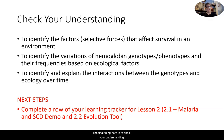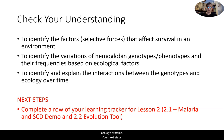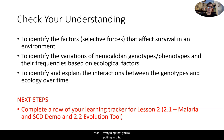The final thing is to check your understanding. You've identified factors or selective forces that affect survival in an environment. You've identified variations in hemoglobin genotypes and phenotypes as well as their frequencies based on ecological factors. You've also identified and will explain the interactions between the genotypes and ecology over time. Your next steps are to create a row on your learning tracker for lesson two, which encompasses both 2.1 and 2.2 — the malaria and sickle cell disease demo as well as the evolution tool we just went over. Thank you so much for being here and for all of your hard work. Hope you have a beautiful day.